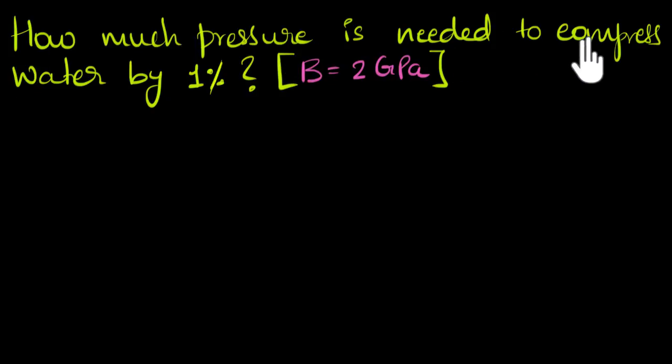How much pressure is needed to compress water by 1% given bulk modulus of water is two gigapascals? Let's solve this. We'll start by collecting some data from the question. We've been given the bulk modulus. We have been asked to compress water by 1% and for that, how much pressure is required? That's the question.